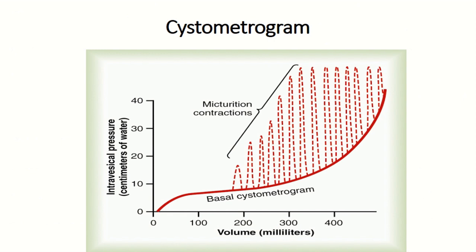During micturition, the pressure changes inside the bladder can be measured by a process called cystometry, performed by inserting a catheter inside the urinary bladder. The recording that shows a curve of pressure versus volume is called the cystometrogram. In this graph, the x-axis shows the volume while the y-axis shows the pressure changes inside the urinary bladder.